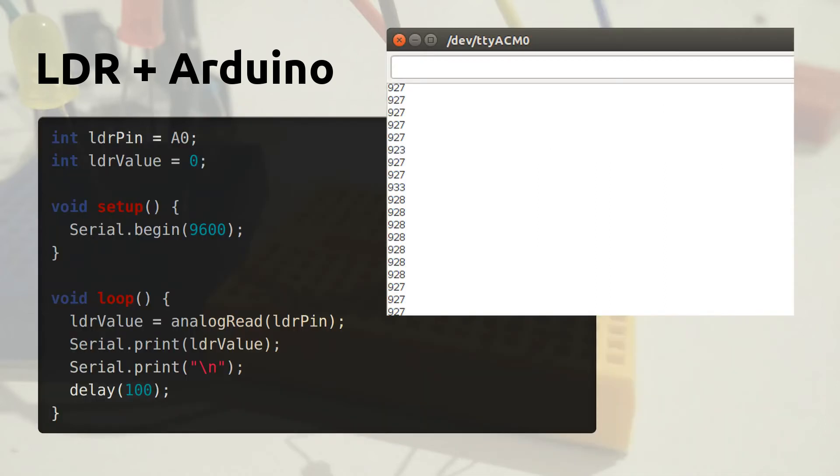To get the value in our program, all we need is the analogRead method. I added some code to load the values into the console.